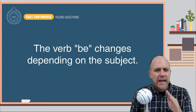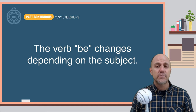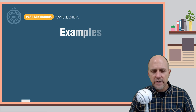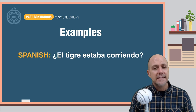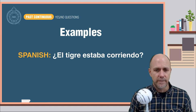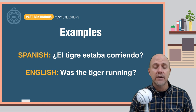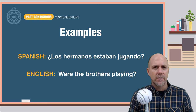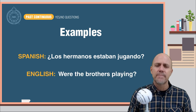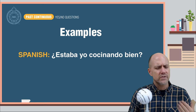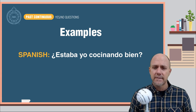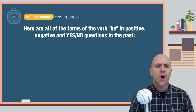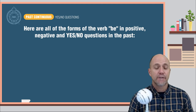So, just like in Spanish, the verb to be changes depending on the subject. Here are some examples. El tigre estaba corriendo — Was the tiger running? Los hermanos estaban jugando — Were the brothers playing? Estaba yo cocinando bien — Was I cooking well?